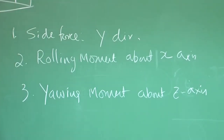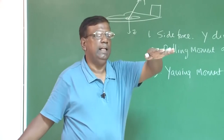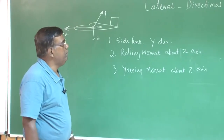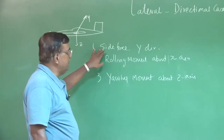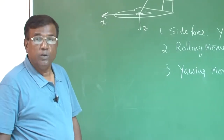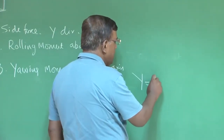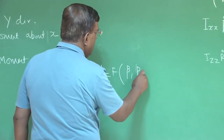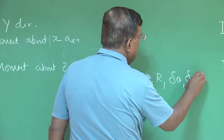We know the sign convention: rolling moment is positive when the right wing goes down as I am flying; yawing moment is positive when the right wing goes back. The next question is: how do we functionalize side force Y, rolling moment, and yawing moment in terms of control and motion variables? Side force Y is a function of beta, roll rate p, and yaw rate r.